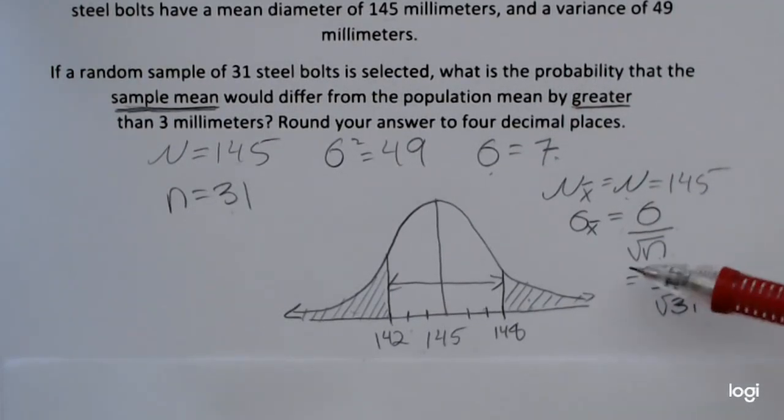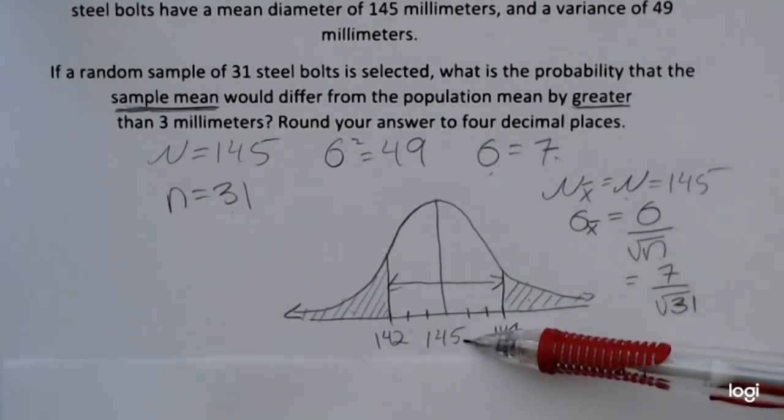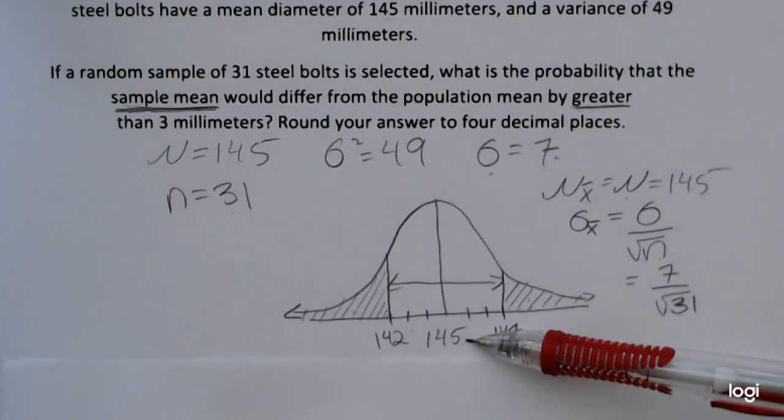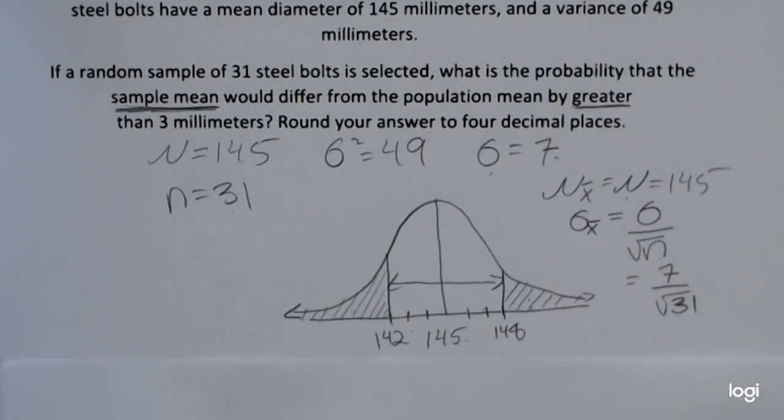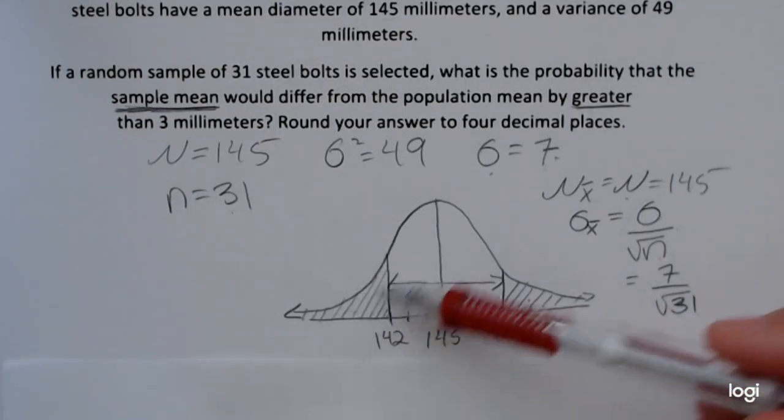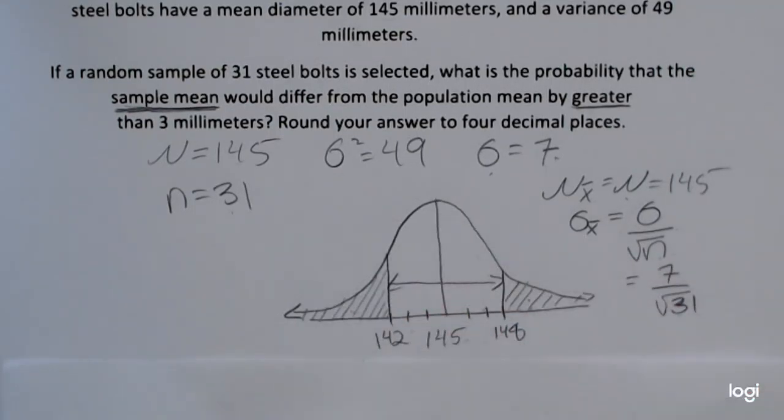So the standard deviation in this case would be sigma, which is 7, divided by the square root of 31. Now I went ahead and sketched the bell curve and put 145 as the mean, because it's the same under the Central Limit Theorem. And I made my bell probably a little too wide.